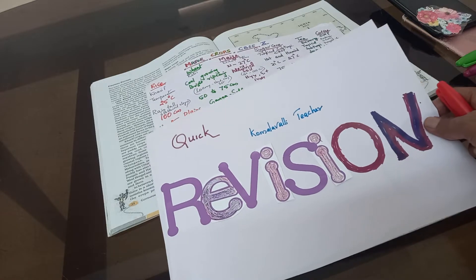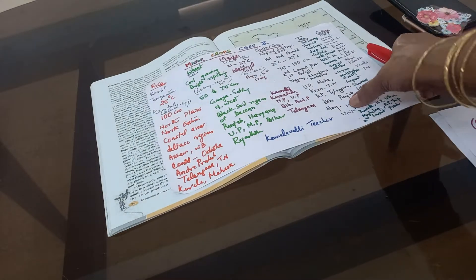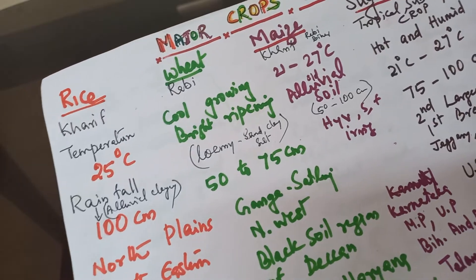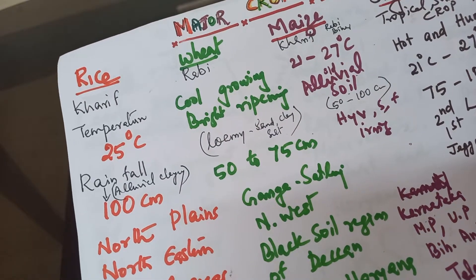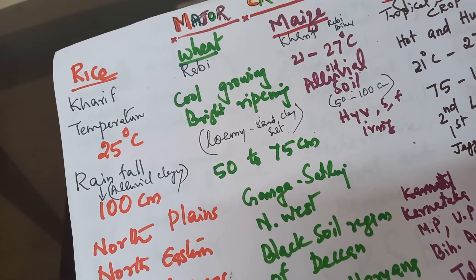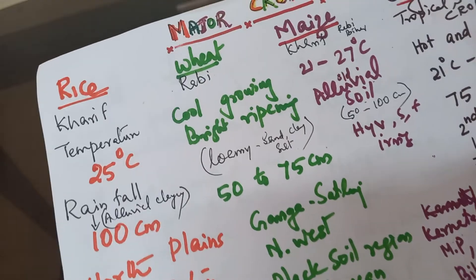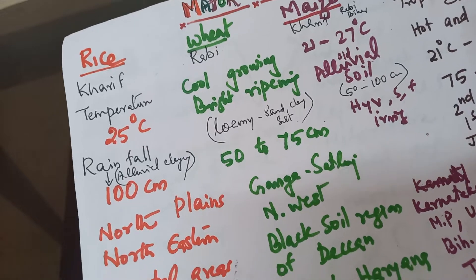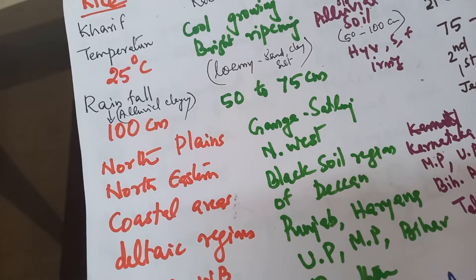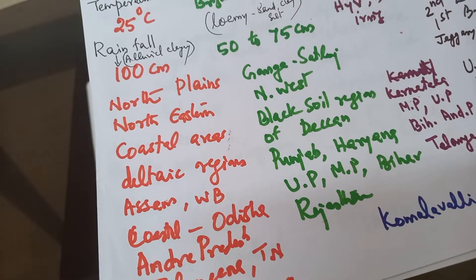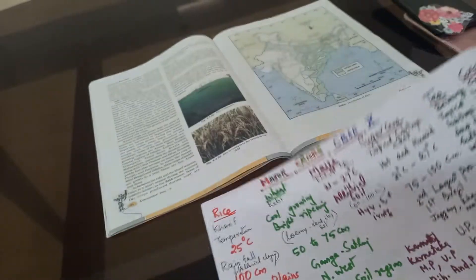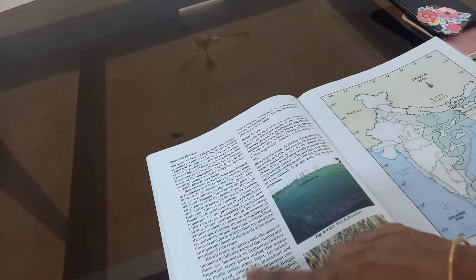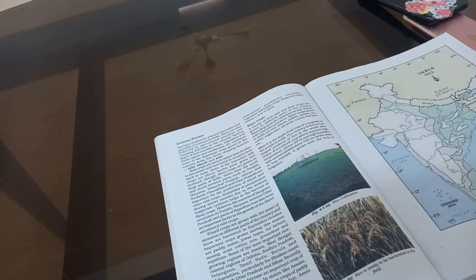Let us see rice. It is a kharif crop. Temperature is 25 degrees Celsius and rainfall is 100 cm. The alluvial clayey soil is needed for rice cultivation — I put it in brackets as it is not mentioned in the textbook. Anyway, it is alluvial soil. The growing areas are northern plains, northeastern coastal areas, and deltaic regions.